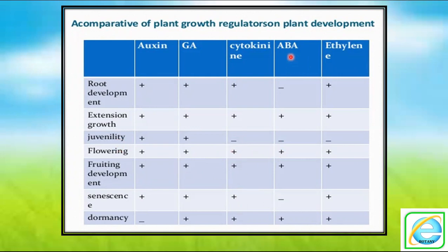Abscisic acid is called the stress hormone. It doesn't play any role in root development, but in extension of growth it plays an important role, as well as in flower and fruit development. This stress hormone plays an important role in flowering, fruiting, and breakdown of dormancy.